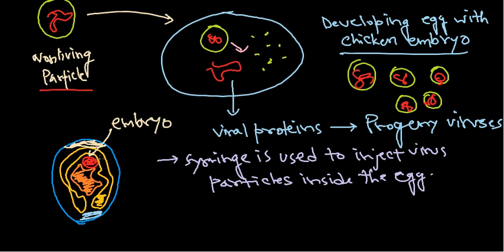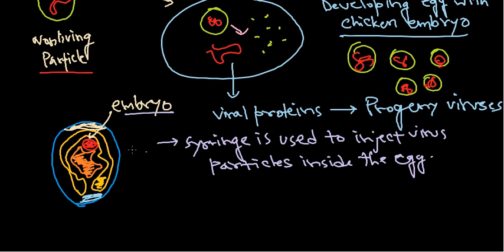There are four regions for injection. Some viruses grow well in the allantoic cavity, some grow well in the chorioallantoic cavity, some grow in the amniotic cavity — which is the cavity where the embryo is developing — and some grow well in the yolk sac. Depending upon the type of virus we want to culture, we inject them in different places.